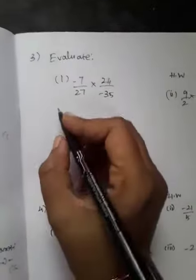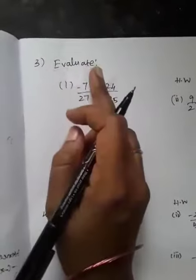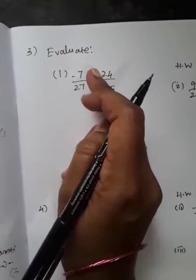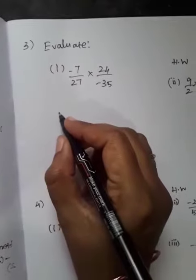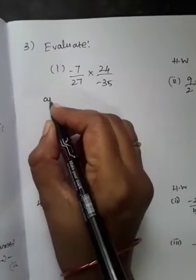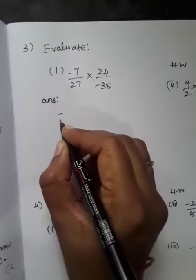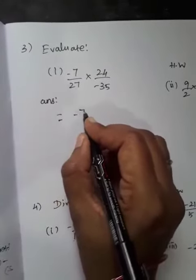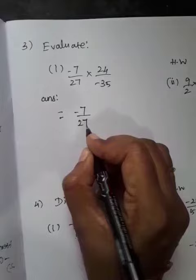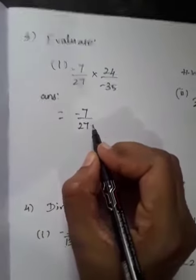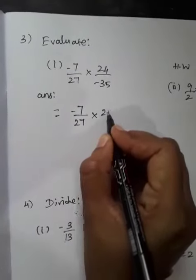Students, your next sum is to evaluate this multiplication. Compared to addition and subtraction, multiplication is quite easy. I will do it, you just look at the sum: -7/27 × 24/-35.